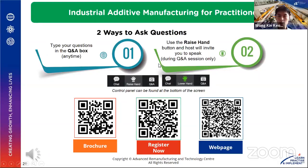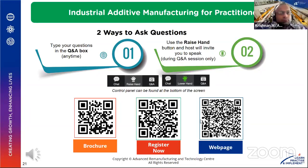With this, we have come to the end of this webinar. I hope we have managed to give you a glimpse of the content and how this course will be carried out. If you want further information, please scan the QR code to take a deeper look at the brochure and the webpage. For participants who are interested, you can use the Register Now page to indicate your interest to sign up. It will be a form sent to the ARTC site where we can contact you. We will now open up for Q&A to see if there are any common questions.